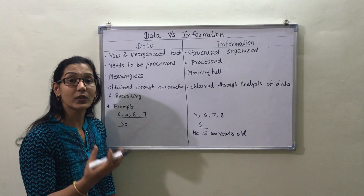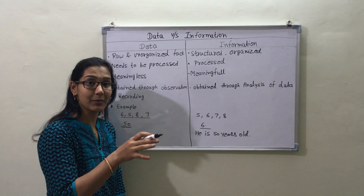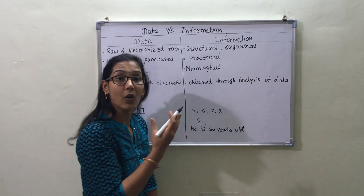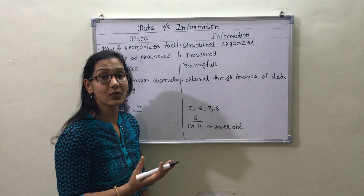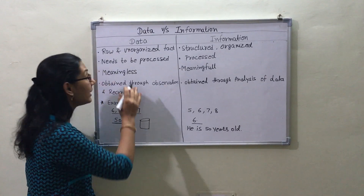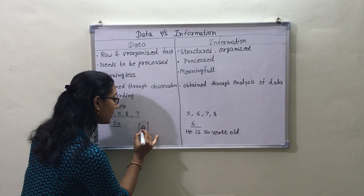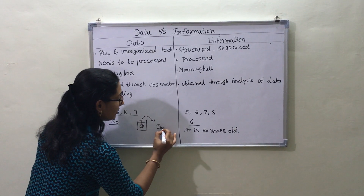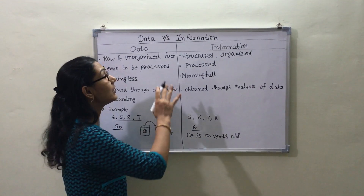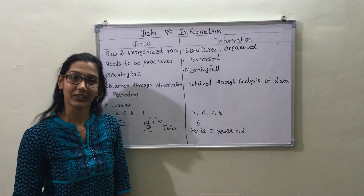The next point is that data is obtained through sensors or any sources like observation and recording. When we enter data into a database, it is simply data. But information is obtained through analysis of data — when we apply any operation on the data, we get information. This is the comparison of data and information. Thank you.